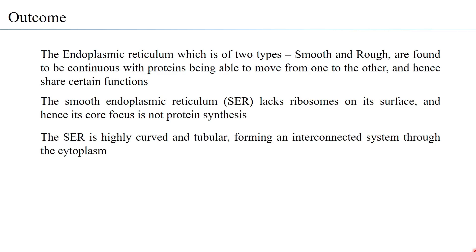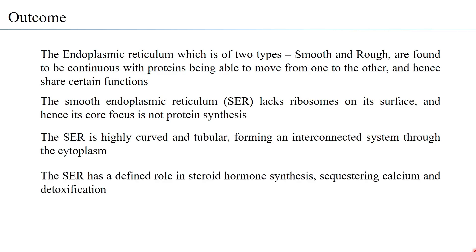Cells that have a high concentration of smooth endoplasmic reticulum often show it as highly curved and tubular, with these tubules connected to each other in the cytoplasm. The smooth ER has a defined role in steroid hormone synthesis — it can synthesize cholesterol, phospholipids, etc. It can also sequester calcium, meaning it stores calcium within itself, and it has a role to play in detoxification.